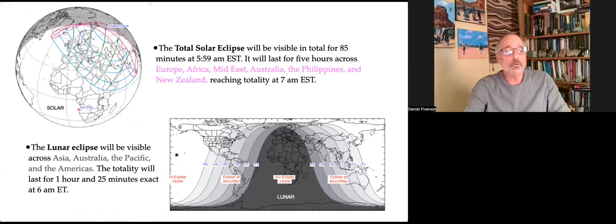The total solar eclipse will be visible for 85 minutes at 5:59 Eastern Time. It will last for five hours across Europe, Africa, the Mideast, Australia, the Philippines, and New Zealand, reaching totality at 7 a.m. Eastern Standard Time.